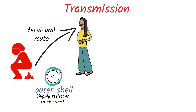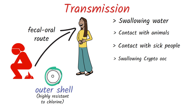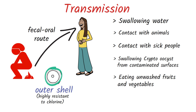Crypto can be transmitted by swallowing contaminated water while swimming or drinking, having contact with animals especially calves and goats and their environment, having contact with people who are sick with crypto especially in child care settings, swallowing crypto oocysts picked up from contaminated surfaces like changing tables, door handles or toys, eating unwashed fruits and vegetables, drinking unpasteurized apple cider, unpasteurized milk, or eating food made with unpasteurized milk.